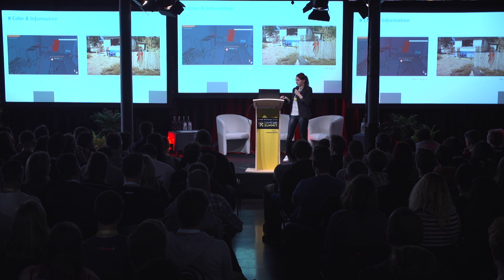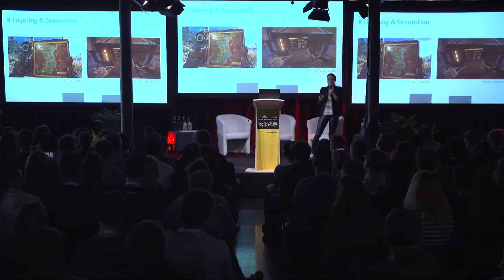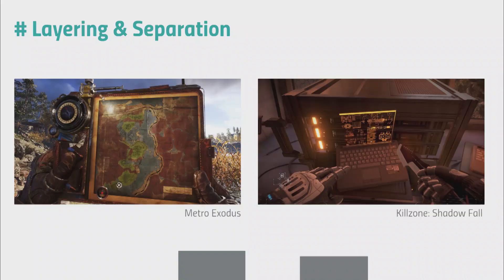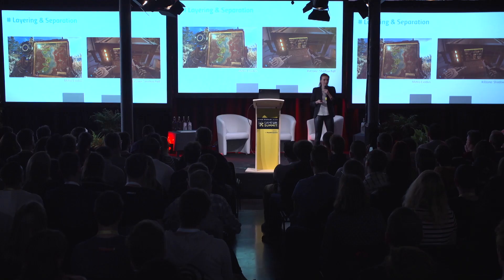The last category is diegetic interfaces — diegetic representation of information within games. Everybody thinks of Dead Space's suit or Far Cry's compass map, which involve layering and separation. But there's a challenge: information must be accessible and understandable to the player while still being part of the game world, which limits our possibilities. This is likely one reason not much has happened in this kind of visualization in recent years. However, there are different ways to approach diegetic information beyond layering and separation.